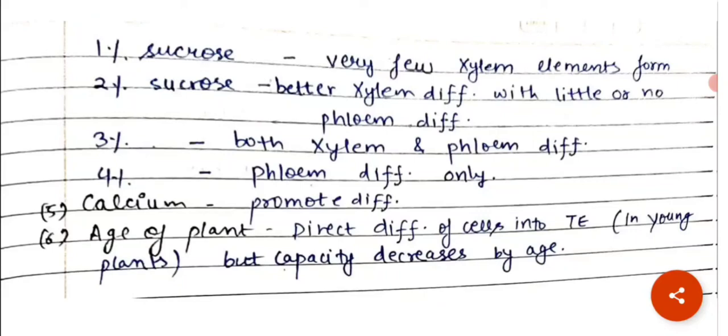Calcium promotes the differentiation of the tracheid elements. Age of the plant is also a factor which affects the vascular differentiation. Direct differentiation of cells into the tracheid elements in young plants. But as the age of the plant increases, the capacity decreases for the differentiation.